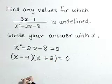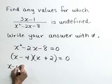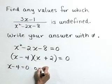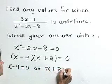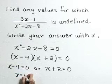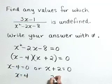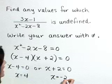Using the zero factor property, x minus 4 is equal to 0 or x plus 2 is equal to 0. So x is equal to 4 or x is equal to negative 2.